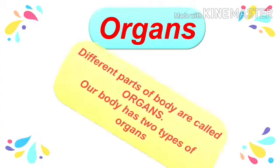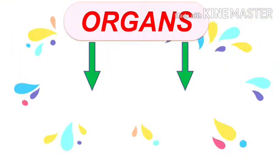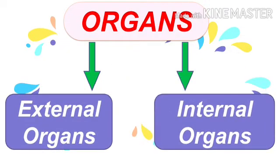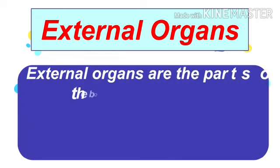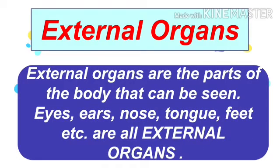What are organs? Different parts of the body are called organs. Our body has two types of organs: the first is external organs, and the second is internal organs. Let us have a look at them in detail. External organs are the parts of the body that can be seen.